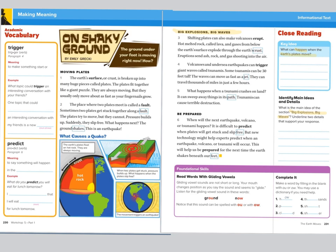Now I'll begin reading. "On Shaky Ground: the ground under your feet is moving right now. How? Moving Plates. The earth's surface or crust is broken up into many huge pieces called plates. The plates fit together like a giant puzzle. They are always moving, but they usually only move about as fast as your fingernails grow. The place where two plates meet is called a fault."